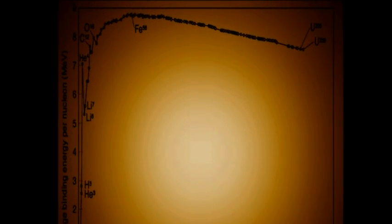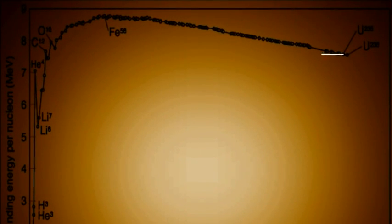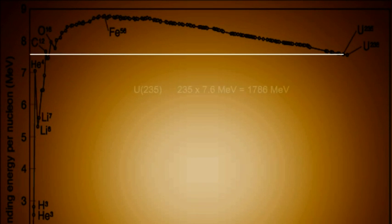Now let's consider what this means from an energy perspective. According to the binding energy chart, Uranium has 7.6 MeV of binding energy for each nucleon for a total of 1,786 MeV.